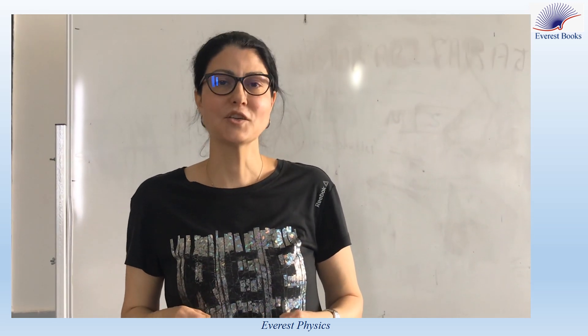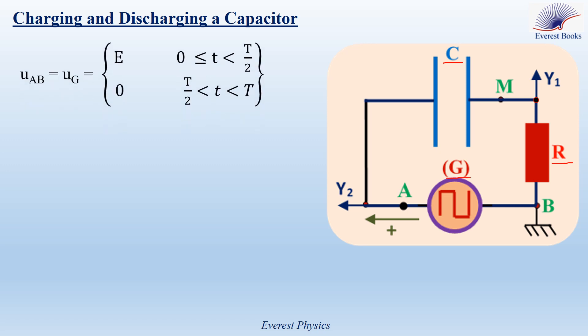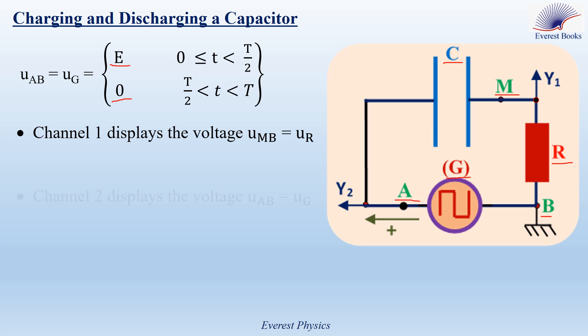Now let's generalize the observed data. The circuit includes a capacitor of capacitance C and a resistor of resistance R connected in series across a generator G providing a square wave voltage U_G, which equals U_AB equals E during the first half period and equals zero during the second half period. The ground of the oscilloscope is connected to point B. Since the phase of channel one is connected to point M, channel one displays U_MB which equals U_R, and since the phase of channel two is connected to point A, channel two displays U_AB which equals U_G.